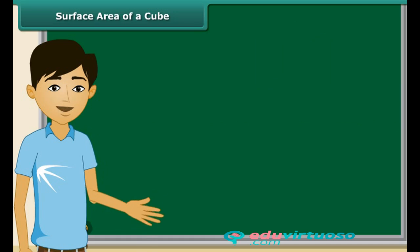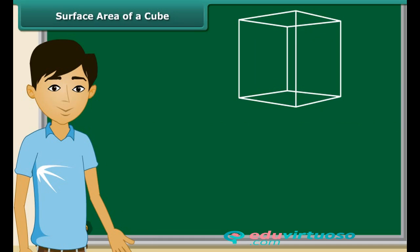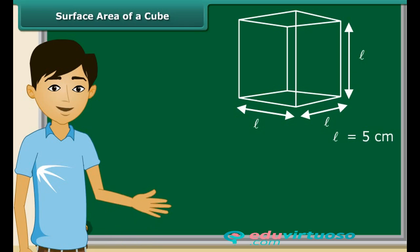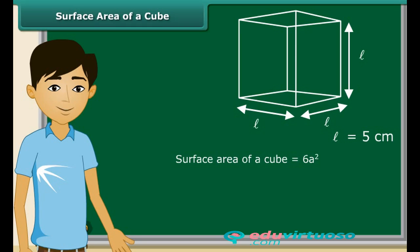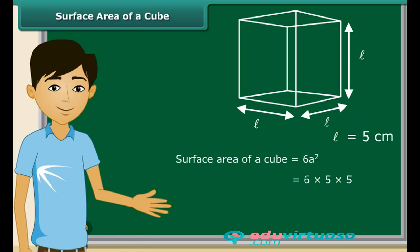Let us do an example. This is a cube having length of each side equal to 5 centimeters. So its surface area will be 6a². Substituting the value of A, we get 6 into 5 into 5, which is equal to 150 square centimeters.